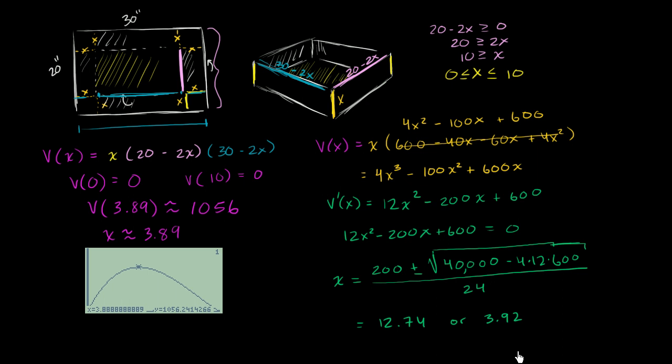So it's 12.74 or 3.92. Now which of these can I use? Well, x equals 12.74 is outside of our valid values for x. If x was equal to 12.74, we would completely cut past - the x's would start to overlap with each other. So x cannot be 12.74. So we get a critical point at x equals 3.92.